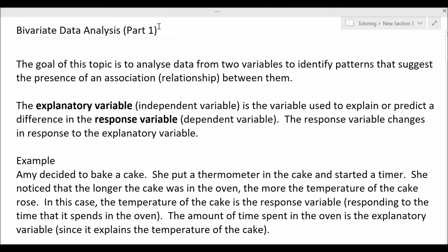Hello and welcome to a tutorial on bivariate data analysis as part of the Queensland General Math syllabus. The goal of this topic is to analyse data from two variables — that's what bivariate means. Bi meaning two and variate referring to the variables. So you are comparing data from two variables to identify any patterns that suggest the presence of an association or relationship between them.